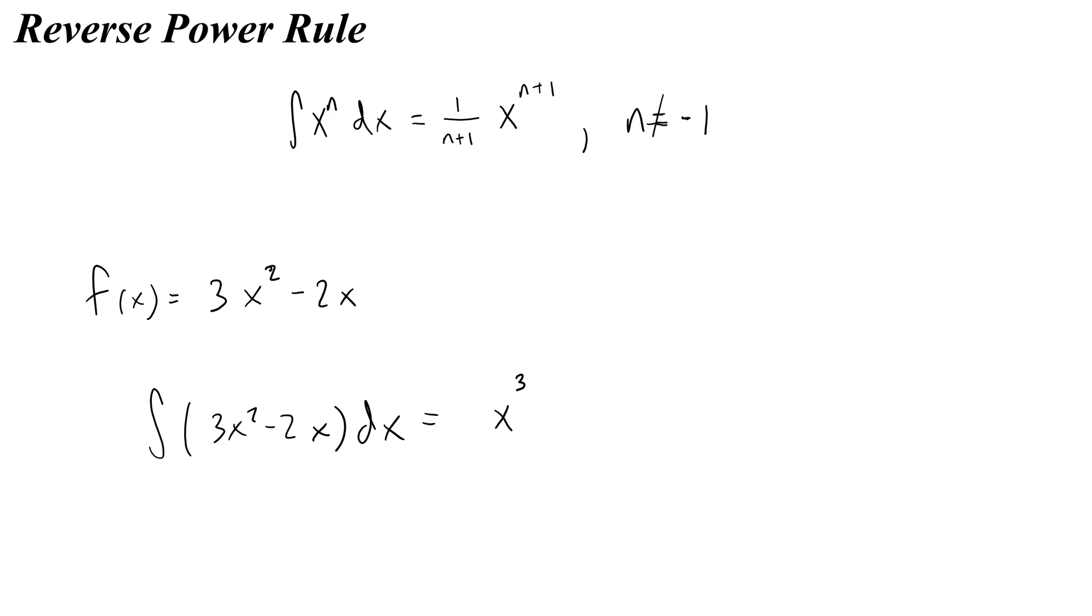Then the second term, minus 2x, you're going to get x raised to the power of 2, and then negative 2 over 2, which you could just leave as 1, and then of course plus c if you're doing an indefinite integral.